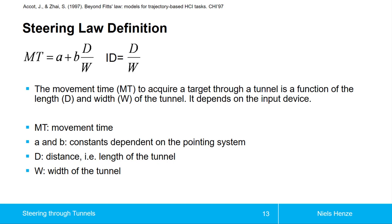And we can also say what's the index of difficulty. And this is just as for Fitts' law—it's the part right of the B. And so the index of difficulty is simply D divided by W.